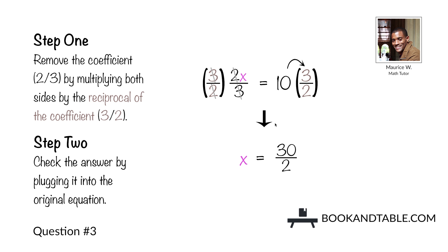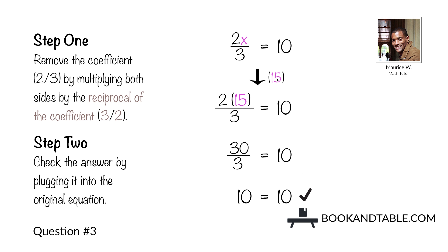When you do that, the coefficient is negated, leaving us with x on the left side. On the right side, 10 (which is 10 over 1) multiplied by 3 in the numerator gives us 30 over 2, which simplifies to 15. So the answer to question number three is x is equal to 15. We check by plugging 15 back in: 2 times 15 is 30, and 30 divided by 3 is 10, confirming the correct value for x is 15.